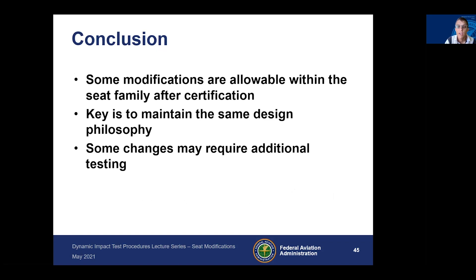In conclusion, some modifications are allowable within your seat family after certification. The key is to maintain the same design philosophy — method of attachment, material, design construction, and fabrication — with small variations to geometry that can be made without additional testing. However, some changes may require additional testing. In those cases, you have choices, particularly for cushions and belts, whether you need a full system test or a component level test.